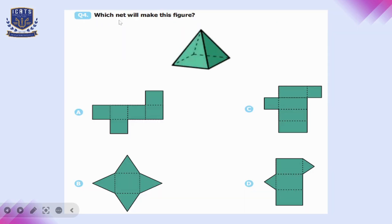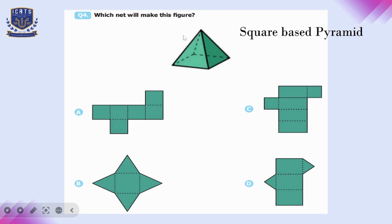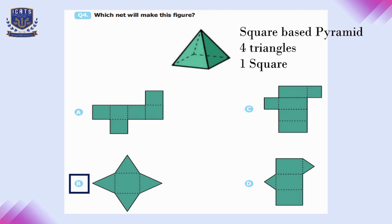Question number four: which net will make this figure? It's a square-based pyramid, which has four triangles and one square. Checking all options, option B shows four triangles and one square, so option B is the correct net for the given shape.